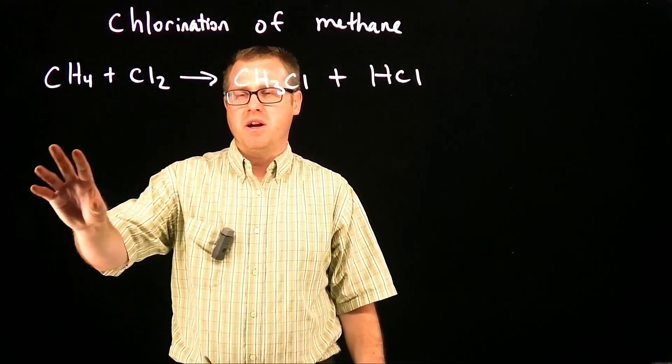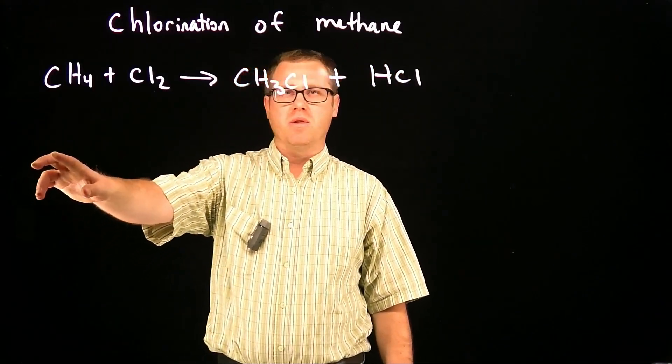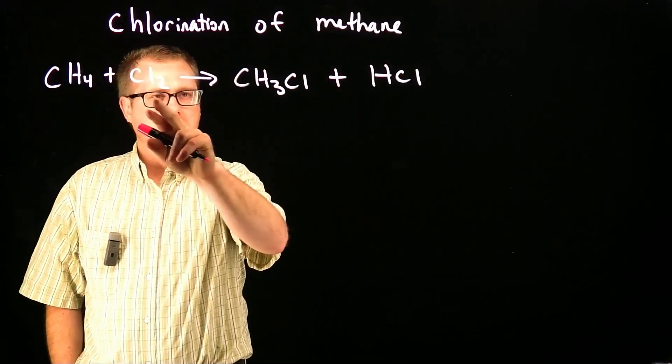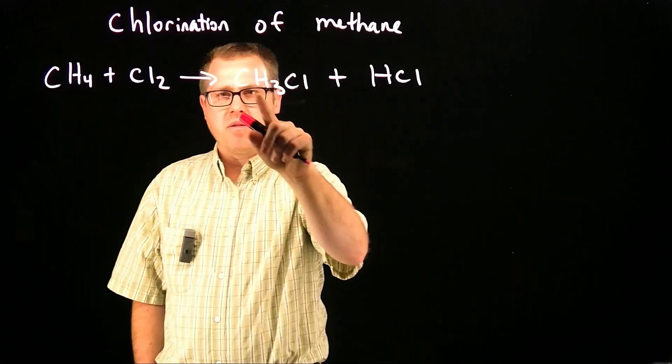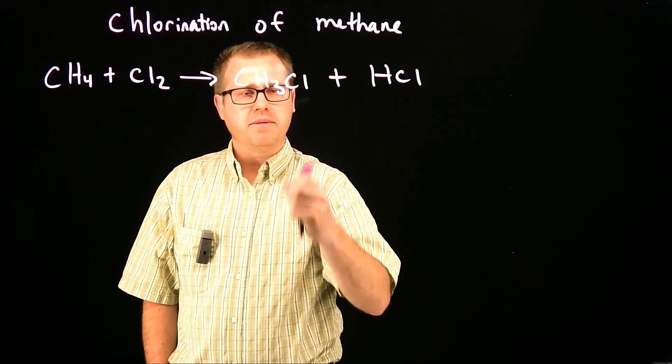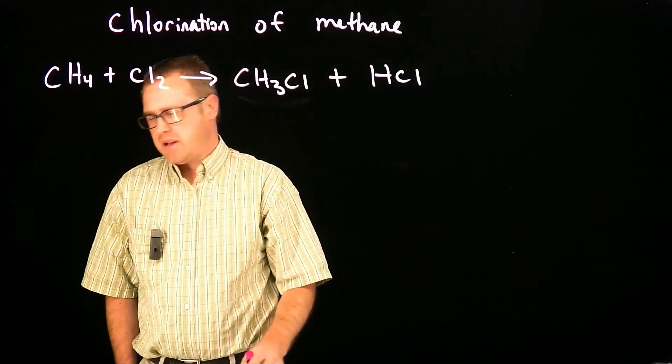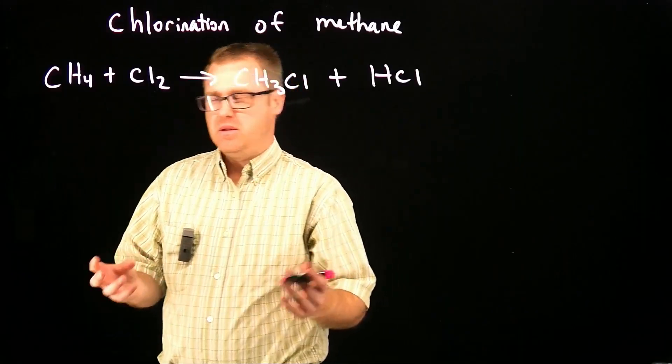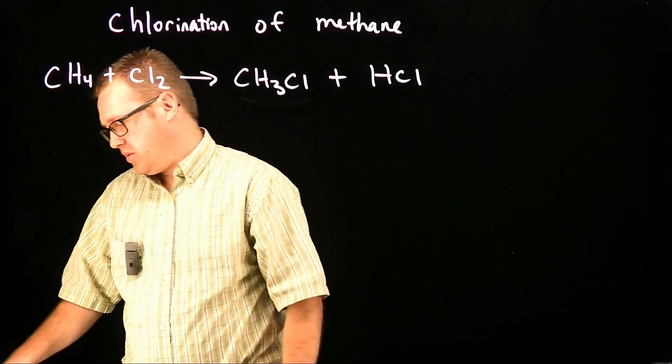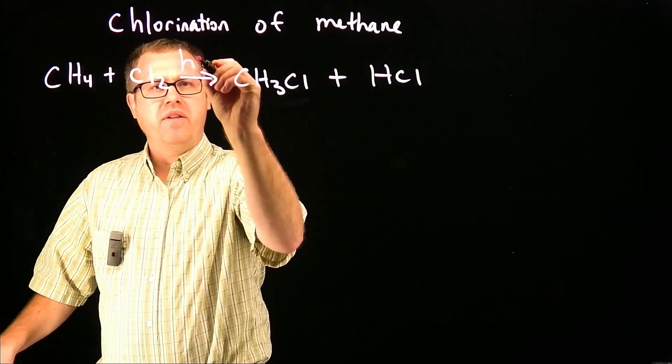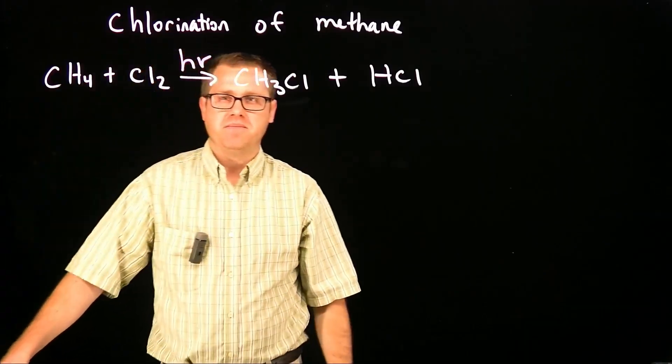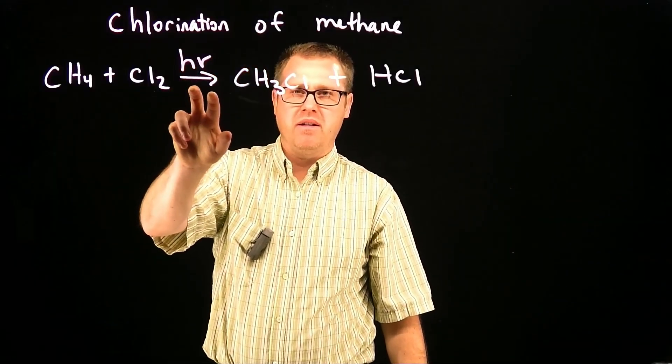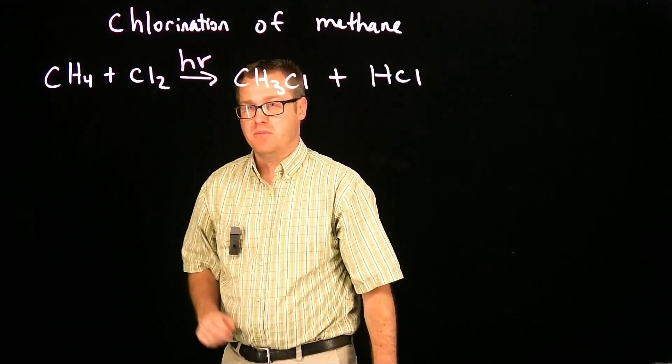The first reaction we want to talk about today is the chlorination of methane. Here's our methane, here's our chlorine, and you can see that we have our methyl chloride as our product. How do I know it's a radical mechanism? Because it's going to tell you, it's going to often have something like light. Whenever you see light above the arrow, it's definitely going to be a radical mechanism.